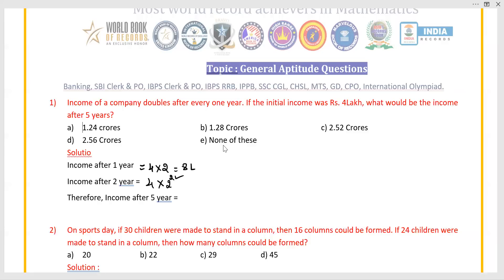Now find out the income after two years: 4 into 2 to the power of 2. Here the power represents the number of years. That equals 4 into 4, which is 16 lakhs after two years. Now find out the income after five years: 4 into 2 to the power of 5. 2 to the power of 5 is 32, so you get 128 lakhs after five years.